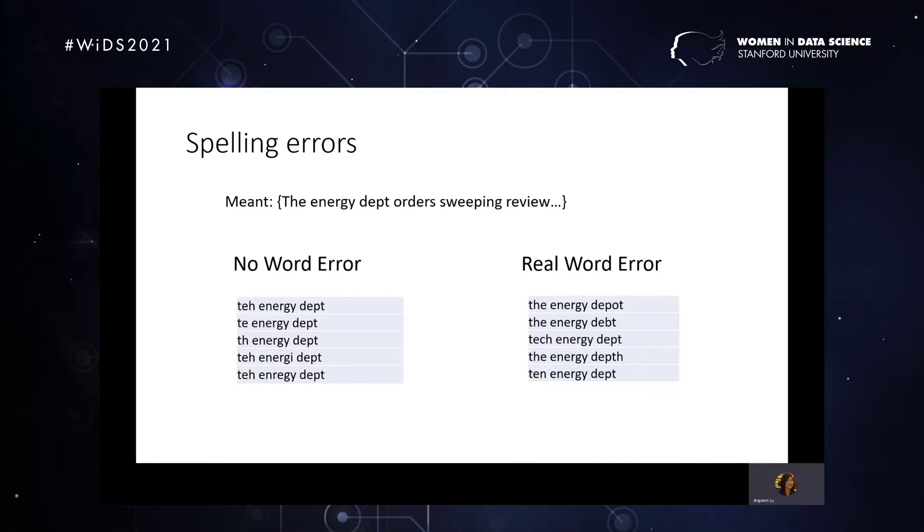To correct both no word errors and real word errors, we first would generate candidates. Candidates are valid words that have a similar letter sequence to the error. Candidate corrections from the spelling error, TH, might include THE, THEN, TEA, and TECH, and THERE, and so on. So we then rank the candidates using a distance metric between the correction and the surface error. Intuitively, among these possible corrections, THE is more likely than THERE. Well, we'd like to have a metric that shares such intuition. Edit distance is a great measure in this regard.